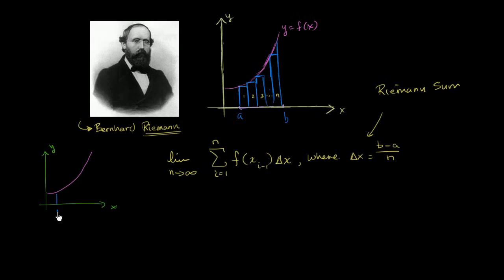As n approaches infinity, so this is a, this is b, you're just going to have a ton of rectangles. You're just going to get a ton of rectangles over there, and they're going to become better and better approximations for the actual area.